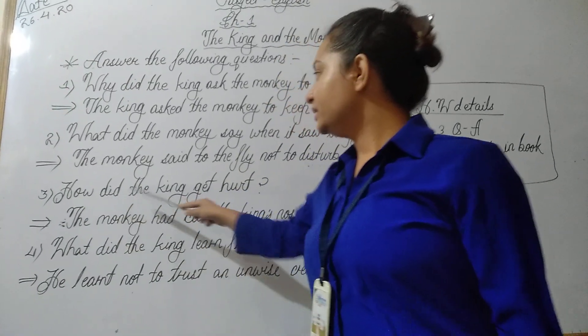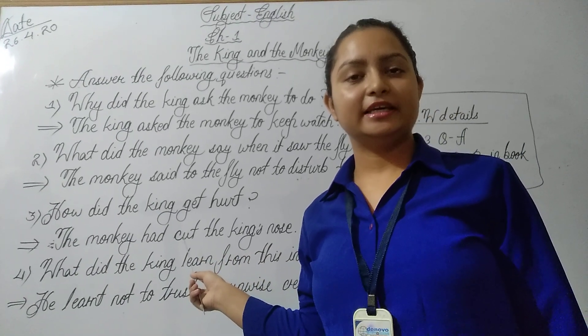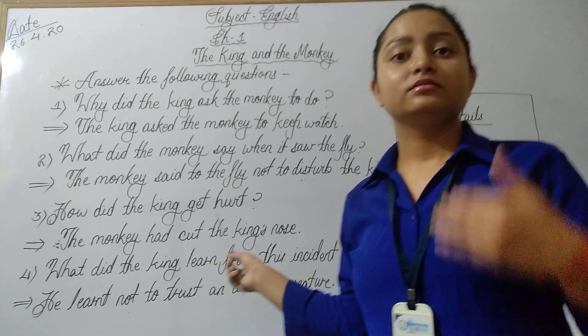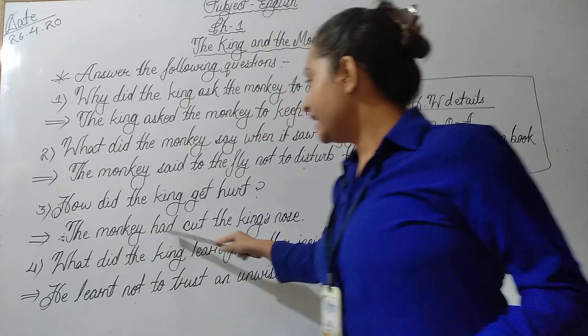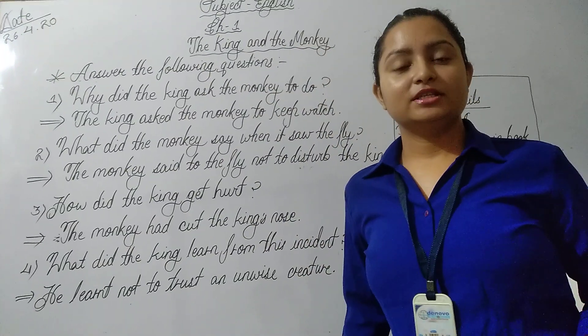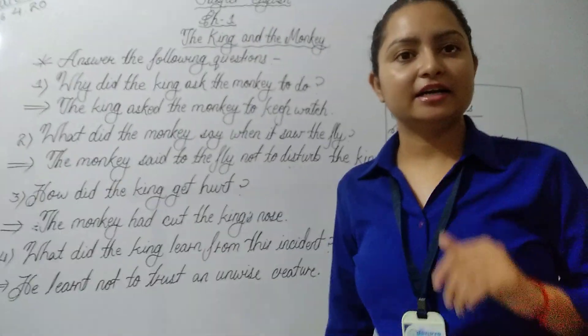Question number 3 is, how did the king get hurt? Raja ko kaisi chod laghi? Raja kis tari se chod hurt huye? Answer is, the monkey had cut the king's nose. Kaisi cut ke raja ko chod laghi? Kyunki bandha ne us raja ka na kaat diya tha.